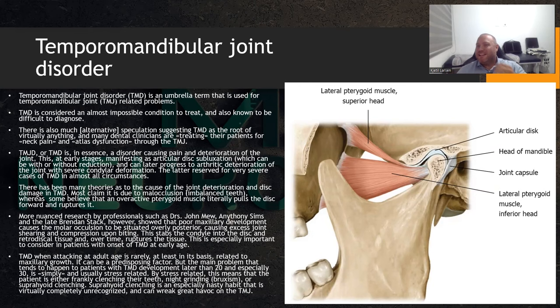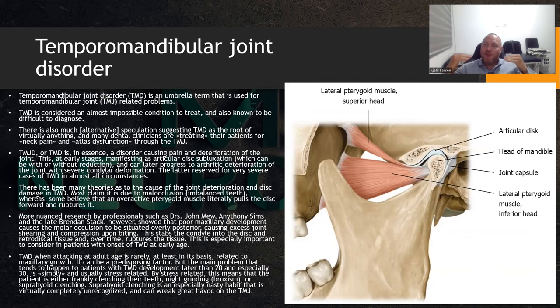When you bite together, the condyle — the head of the mandible — will be situated too far back, and it will crush into the back of the joint, compressing the retrodiscal ligament, the disc, and the nerve in the back. This is what causes the joint deterioration. So if we go in and treat the teeth, we balance the teeth — we're treating the symptom, not the cause.